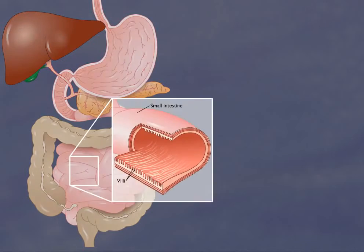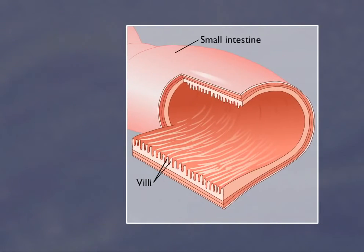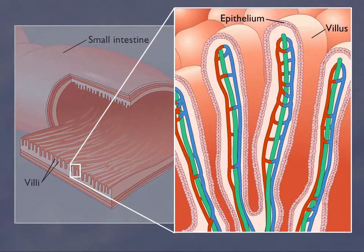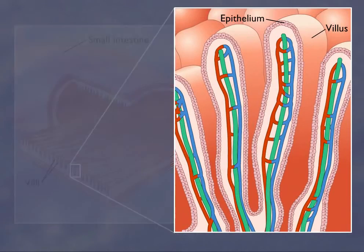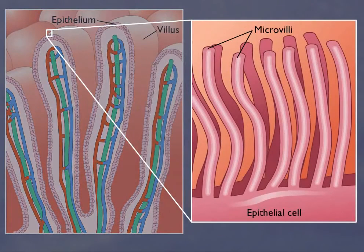An example of how enzymes function in the body is from the enzyme sucrase. Sucrase resides on the surface of the microvilli on the intestinal epithelial mucosal cell surfaces.